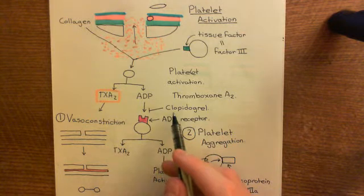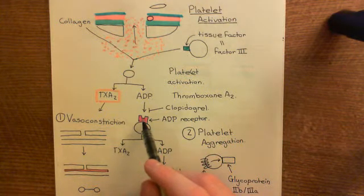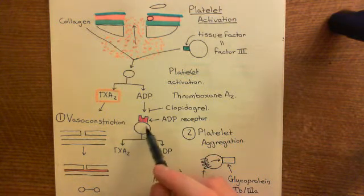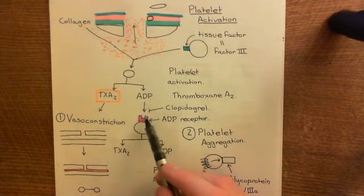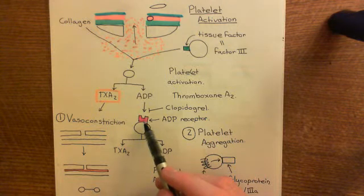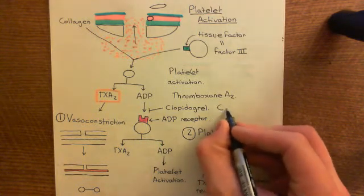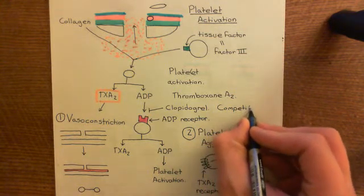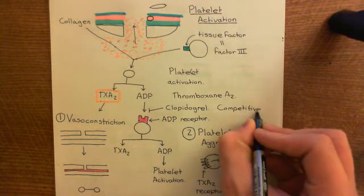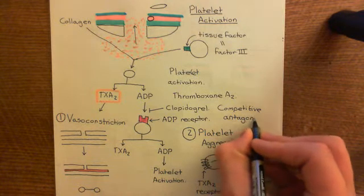If you use clopidogrel, it will bind to the ADP binding site on the ADP receptor but not activate the ADP receptor, so it won't cause activation of the platelet. All it will do is stop the ADP from being able to bind, and therefore stop the activation of the ADP receptor by ADP. So it's a competitive antagonist — it doesn't inhibit the ADP receptor; instead, it prevents the activation of the ADP receptor. That's what a competitive antagonist is.